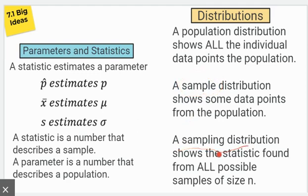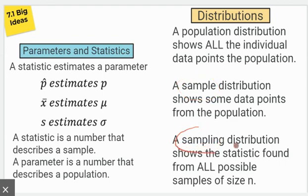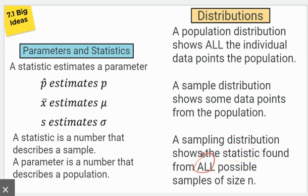A sampling distribution shows the statistic found from all possible samples of a particular size. So a sampling distribution is filled with statistics that come from samples. There's a big difference between a sample distribution and a sampling distribution. For a sampling distribution, you choose any kind of statistic — most of the time it's either a sample mean or a sample proportion — and once you find that statistic for every possible sample and put it into a distribution, that's called a sampling distribution.